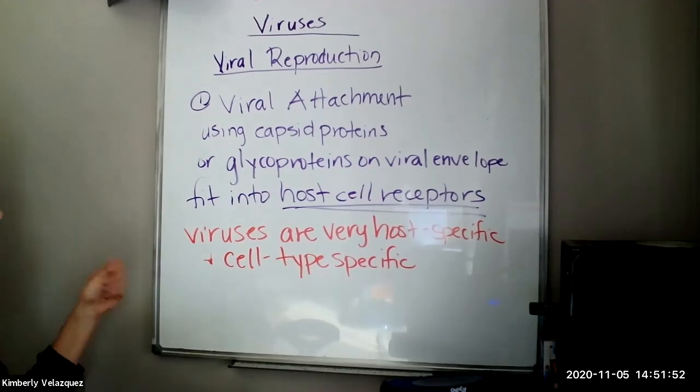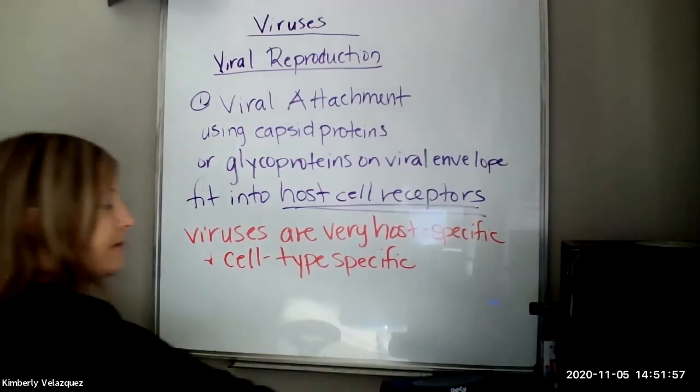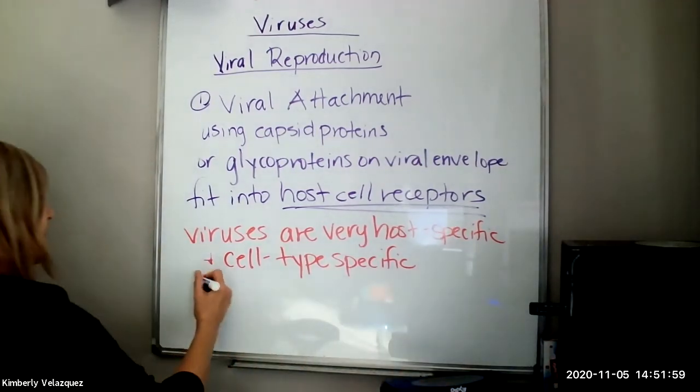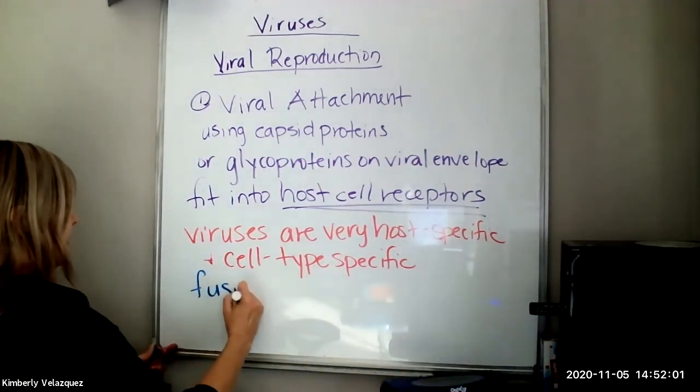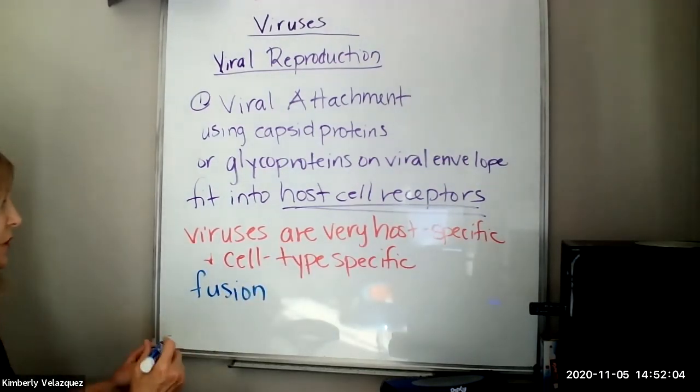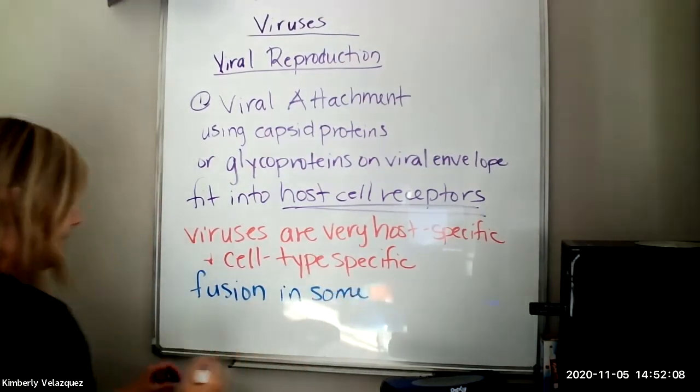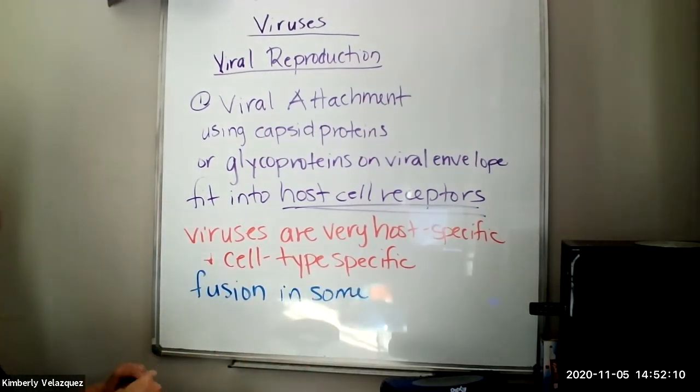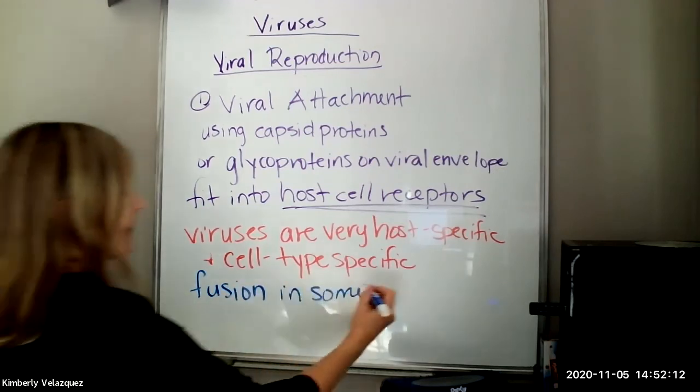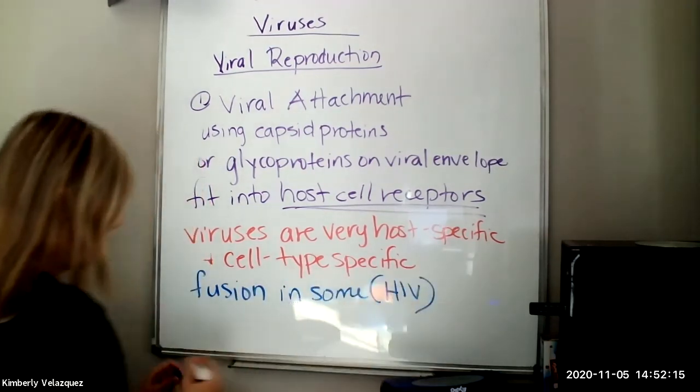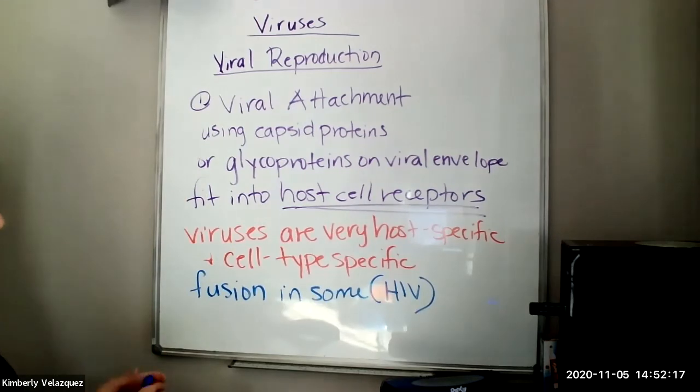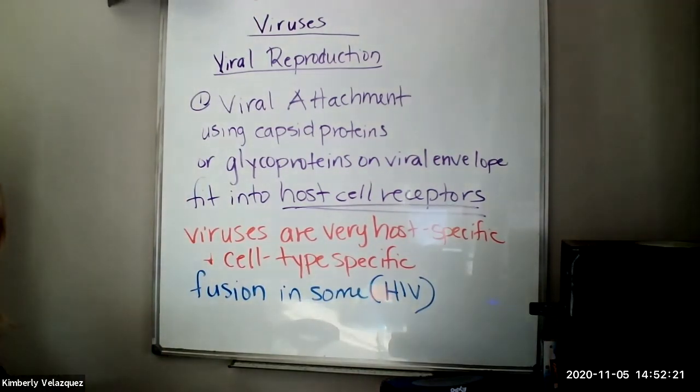So this is why viruses are host specific and cell type specific. If they're allowed to attach, sometimes another step occurs called fusion, in which the viral envelope actually kind of zips together or fuses with the host cell membrane. And then for sure that virus is getting into the host cell. HIV is an example of a virus in which the viral envelope fuses with the host cell membrane.